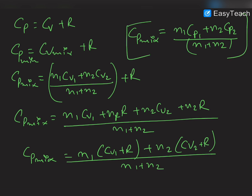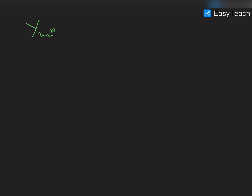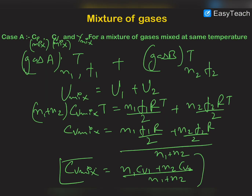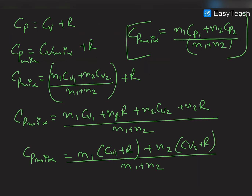Now let us find gamma mixture. Gamma mixture is Cp mixture divided by Cv mixture, and by dividing these two expressions you can see that it equals (N1 Cp1 + N2 Cp2) / (N1 Cv1 + N2 Cv2). This is the expression for gamma mixture. This completes Case A.